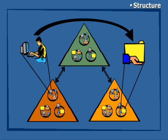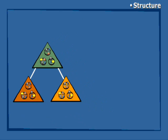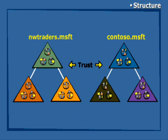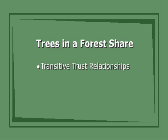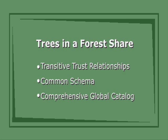The tree model of multiple domains can be extended to create a forest of trees for organizations that need to maintain separate organizational structures, such as a company that needs distinct public identities for its subsidiaries. Although each tree can have different naming schemes, they share three things: transitive trust relationships between any domain within the forest, a common schema — the complete set of object types — and they share the comprehensive global catalog.